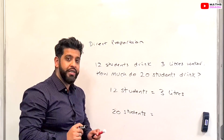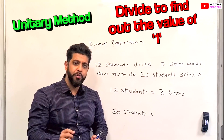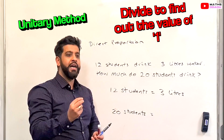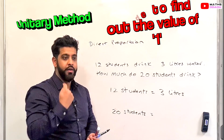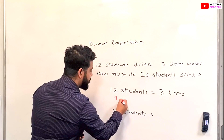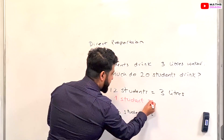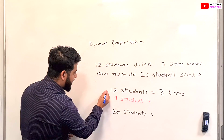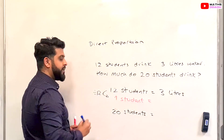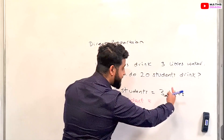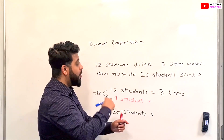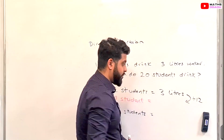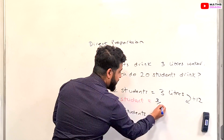I like to use the unitary method — it's a really simple and efficient method. It involves finding what one unit represents, so in this case, what one student represents. How does 12 become 1? We divide by 12. Because it's a direct proportion relationship, we do the same thing on the other side — we also divide by 12.